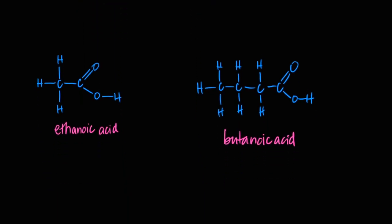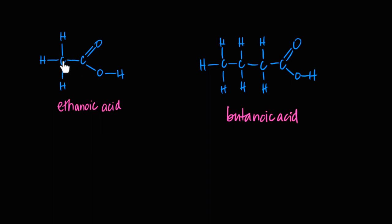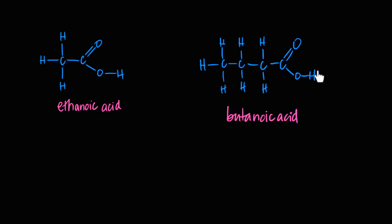Now quickly covering carboxylic acids. The COOH group gives '-oic acid' ending. A two-carbon acid is ethanoic acid — 'eth' tells us two total carbons, '-an' for single bonds, '-oic acid.' The acid carbon is always part of the parent chain and is always carbon one. A four-carbon straight-chain acid with no substituents — all single bonds — is butanoic acid.